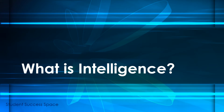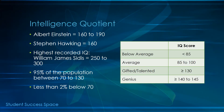In science, the term intelligence typically refers to what we would call academic or cognitive intelligence. A person's IQ can be calculated by having the person take an intelligence test. IQ is an acronym for intelligence quotient.